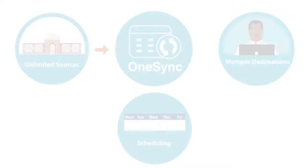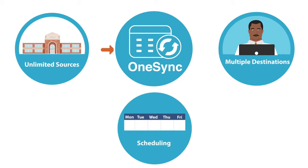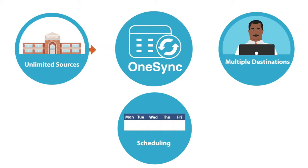Most of the time, the way this software works is straightforward. You have some source database, which is your student information pretty typically, or an HR system. You're going to bring that information into some middleware product, and that product is going to move forward and create the login accounts in some destination directory — usually Active Directory, Azure, or Google.